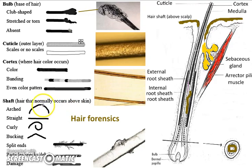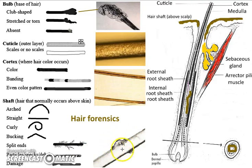The shaft can be arched, straight, or curly — which we think of as pubic hair, but not always. Buckling can also be a pubic kind of hair. Split ends are torn pieces. Particles include spectral debris — right here we have some dandruff forming on the hair shaft microscopically. And damage, meaning pieces missing. These and more help us to identify hair so that we can match the suspect with evidence left behind.